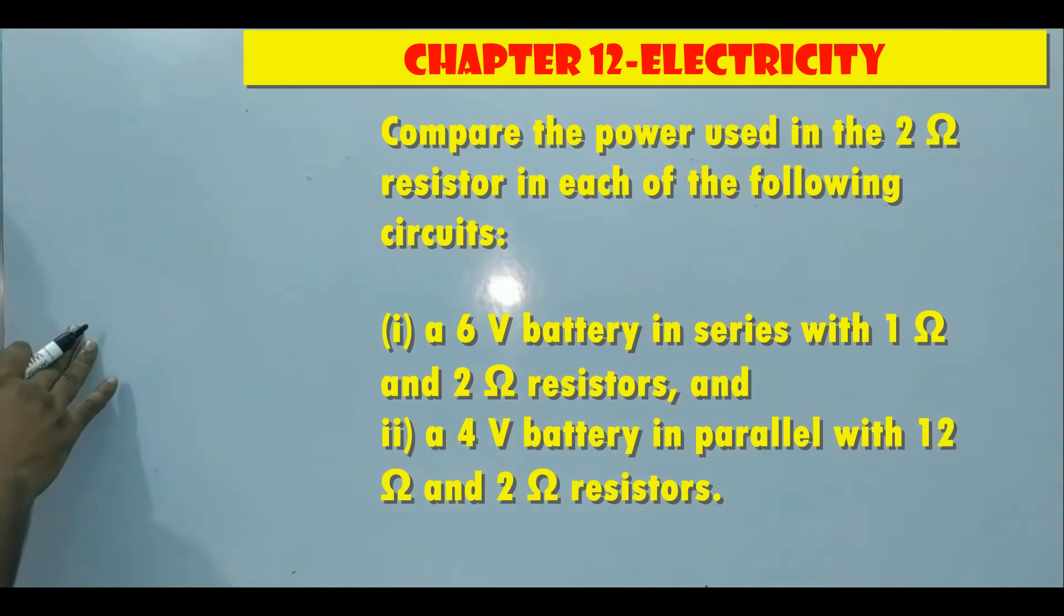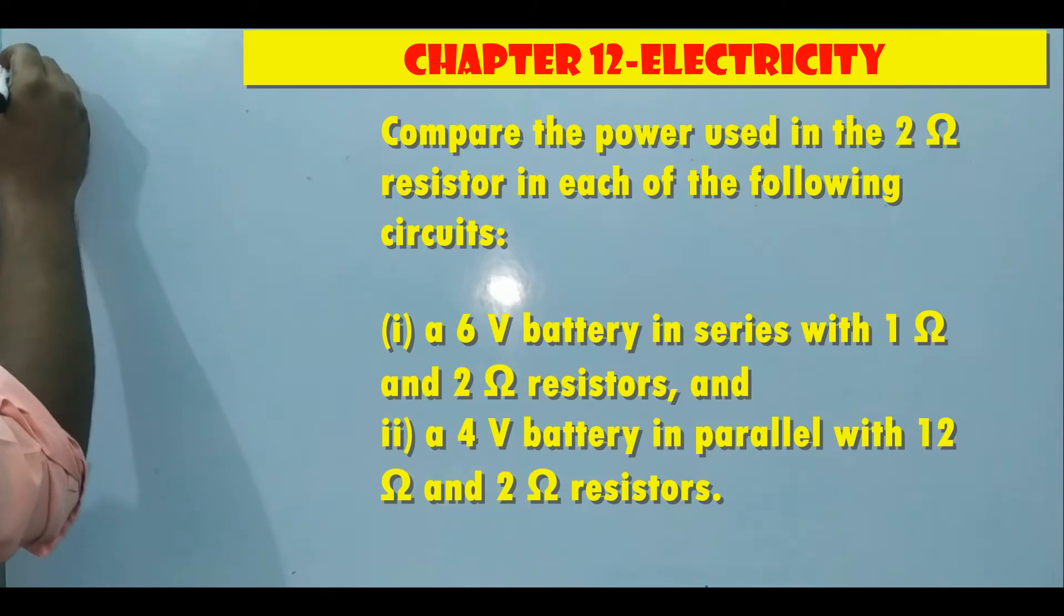14th exercise: Compare the power used in the 2 ohm resistor in each of the following circuits. First, a 6 volt battery in series with 1 ohm and 2 ohm resistors. Second, a 4 volt battery in parallel with 12 ohm and 2 ohm resistors. First we'll take subdivision one.